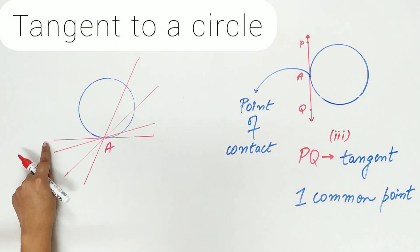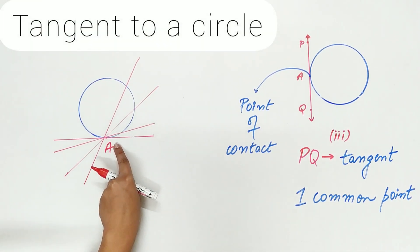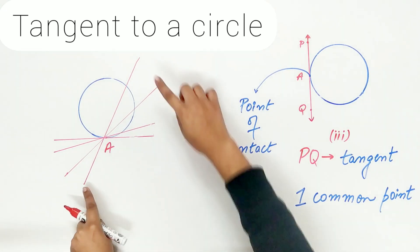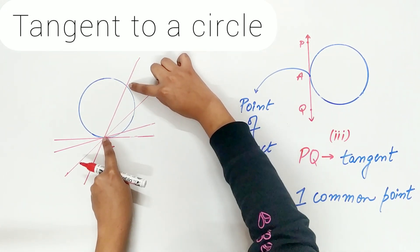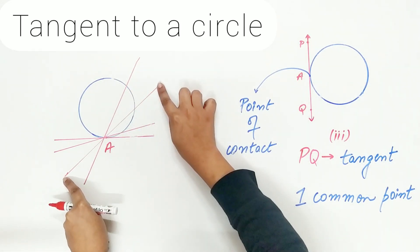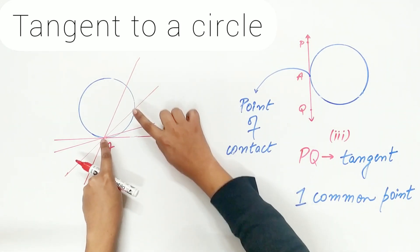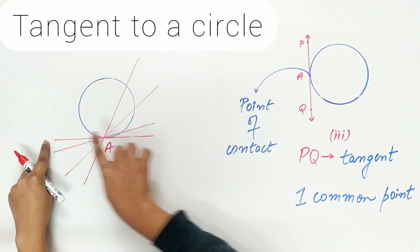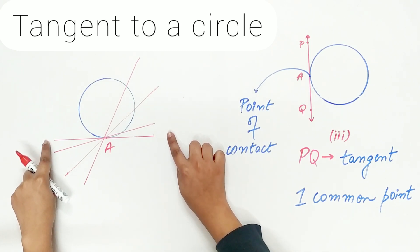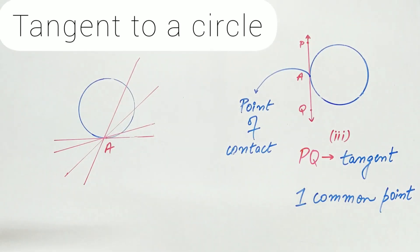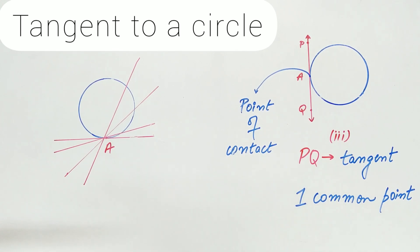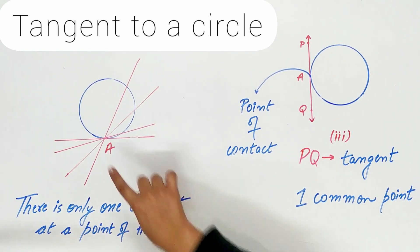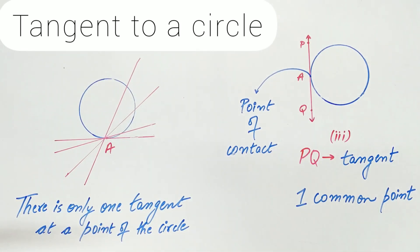I have drawn multiple lines from point A. This line intersects the circle at two points, this line also intersects the circle at two points, and this line intersects the circle at two points. There is only one line that touches the circle. Hence we can conclude that there is only one tangent at any point of a circle.